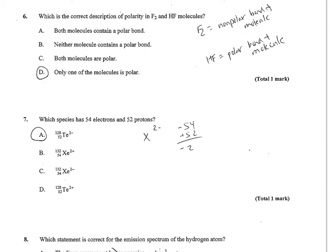Number 7, which species has 54 electrons and 52 protons? The 52 protons identifies it as tellurium. Only tellurium contains 52 protons. The 54 electrons lets me know it's picked up two extra electrons, which would be a -2 charge. So the only one fitting that description is A.